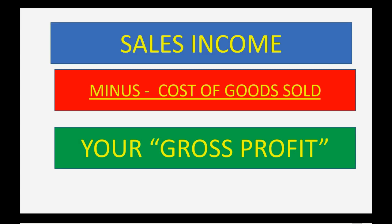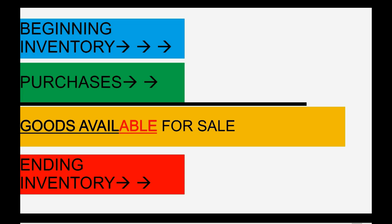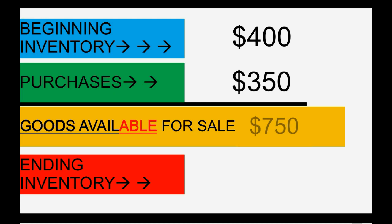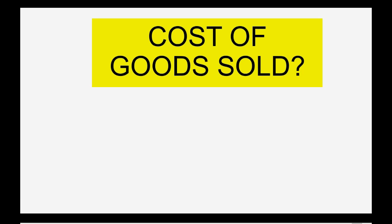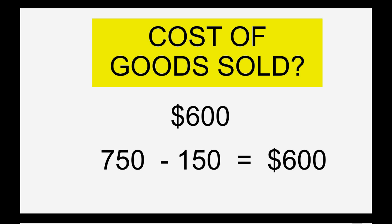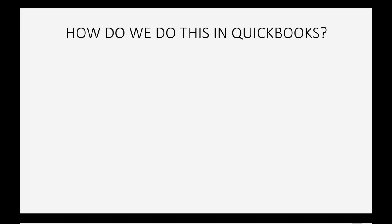We focus on that cost of goods sold figure. As learned in a prior video, cost of goods sold equals beginning inventory plus purchases, which gives goods available for sale, minus ending inventory. In our example: $750 goods available for sale minus $150 ending inventory equals $600 cost of goods sold — that's what you paid for the merchandise that went out.